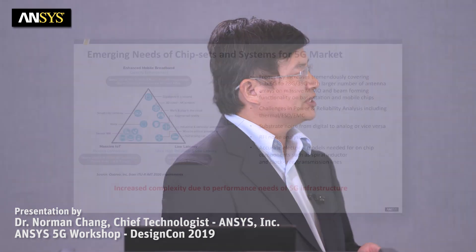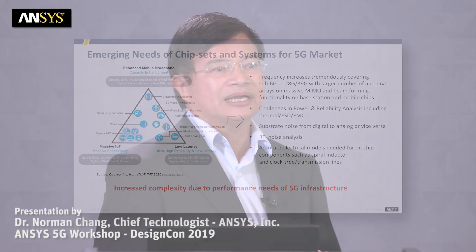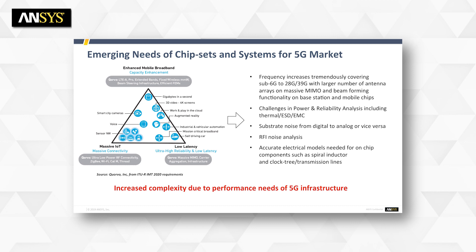The first problem is that frequency continues to increase from sub-6 GHz to 28 GHz to 39 GHz bands, with multiple antennas using massive MIMO and beamforming on mobile phones or 3D ICs — how do we reduce noise interference between modules? Other challenges include power integrity, reliability integrity, substrate noise interference from the digital section impacting the analog section, and high-frequency design requirements for clock trees, transmission lines, and spiral inductors.